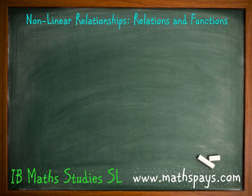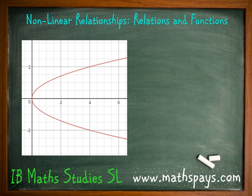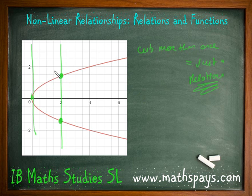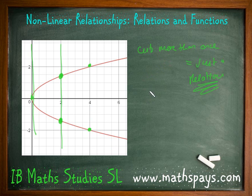Now let's look at a situation where it's not going to be a function. Using x equals y squared again — if I do the vertical line test at x equals two, you'll see there are two different coordinates that have that x-value of two. So if the vertical line cuts more than once, then it is just a relation, not a function. You might say, what if I put the line somewhere that only cuts once? The rule is that if you can place that vertical line anywhere on the graph and it cuts in more than one place, then there are two coordinates sharing the same x-value — and it's just a relation.